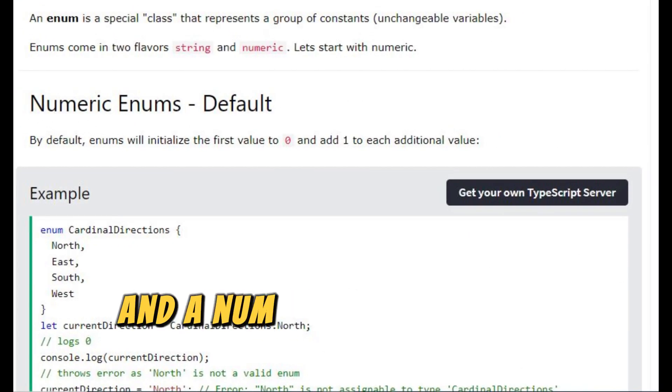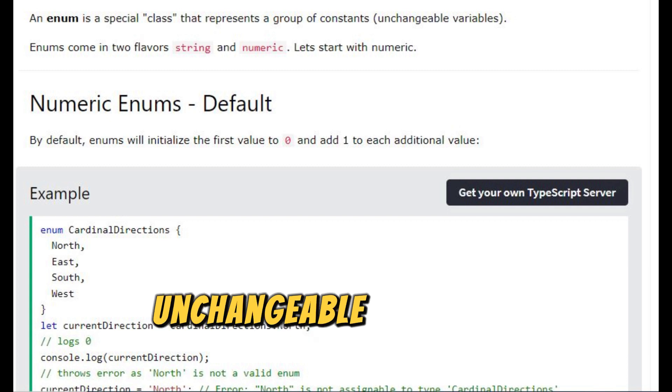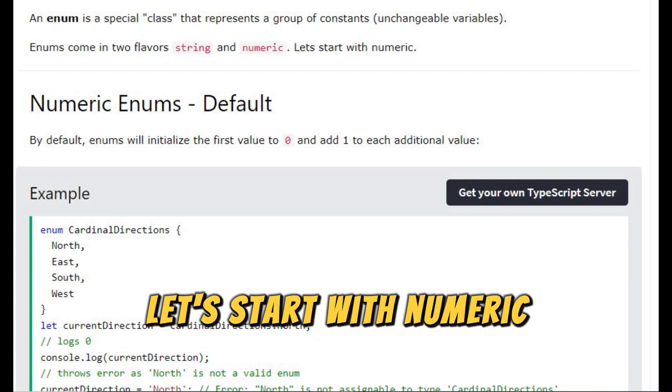TypeScript enums. An enum is a special class that represents a group of constants, unchangeable variables. Enums come in two flavors: string and numeric. Let's start with numeric.